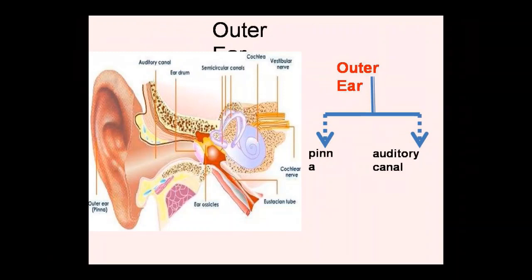Now let's look at the parts in detail, starting with the outer ear. Looking at the diagram, you can see the outer ear — this outer ear, which we call the pinna, acts as a funnel to conduct air vibration through to the ear drum.